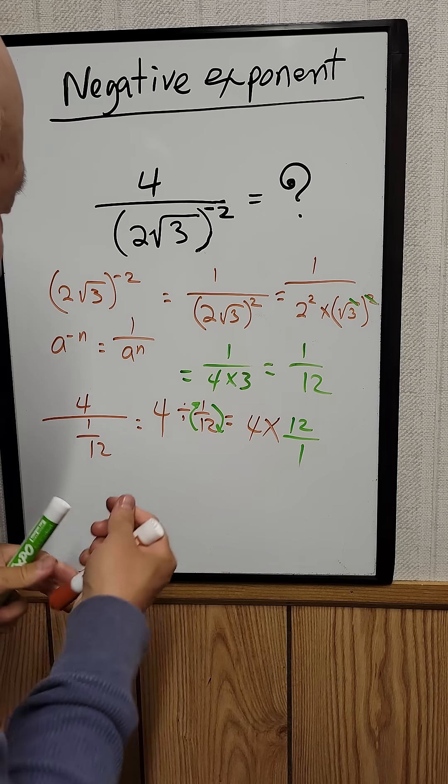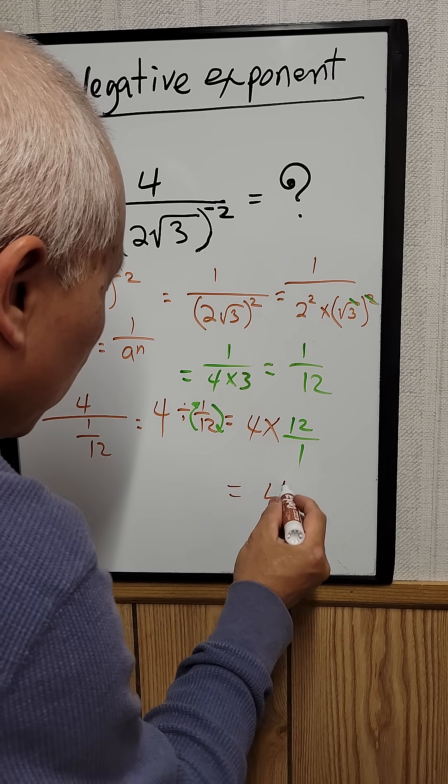So what is that? 4 times 12 is 48. That's your answer.